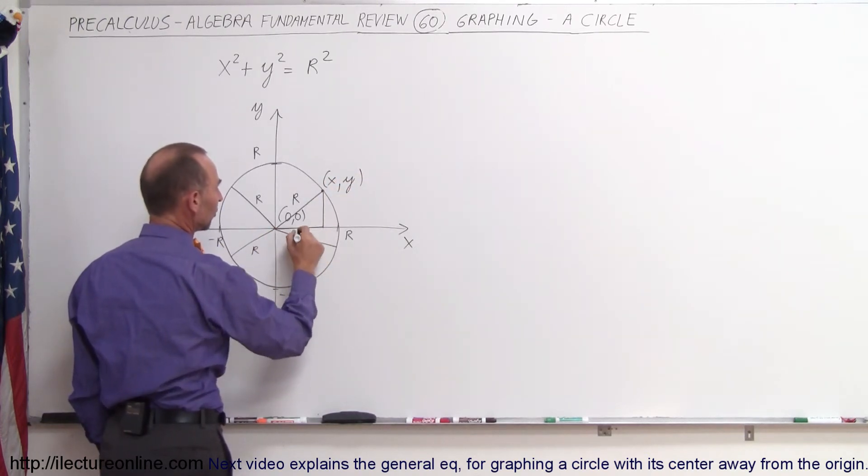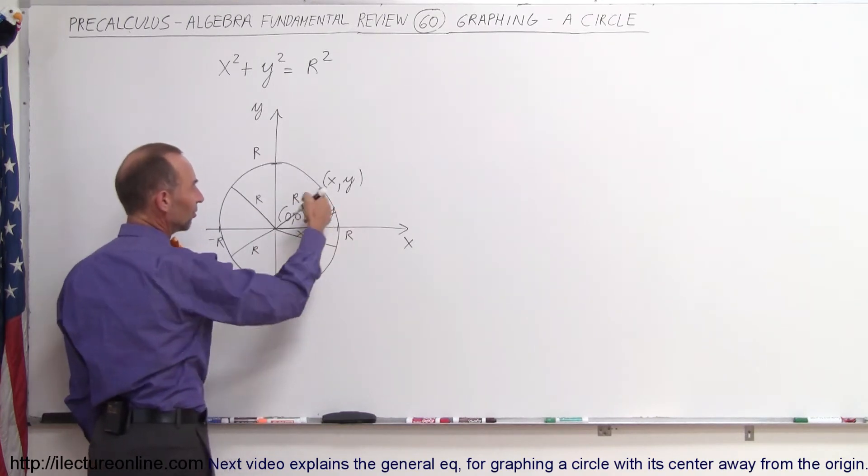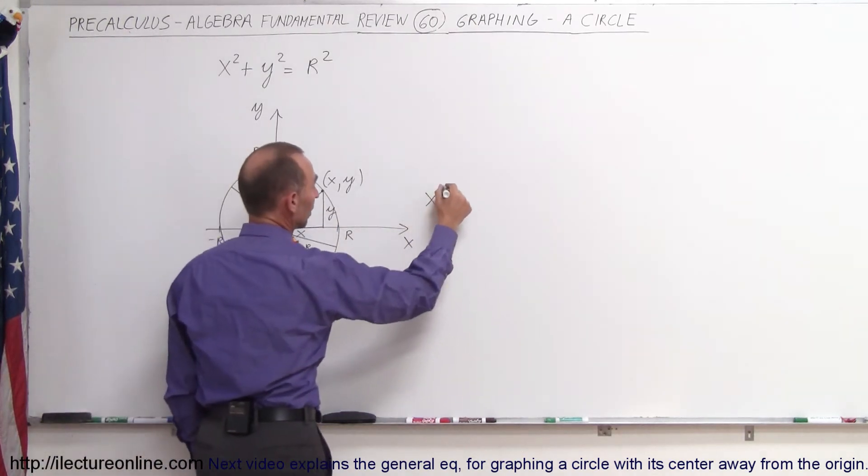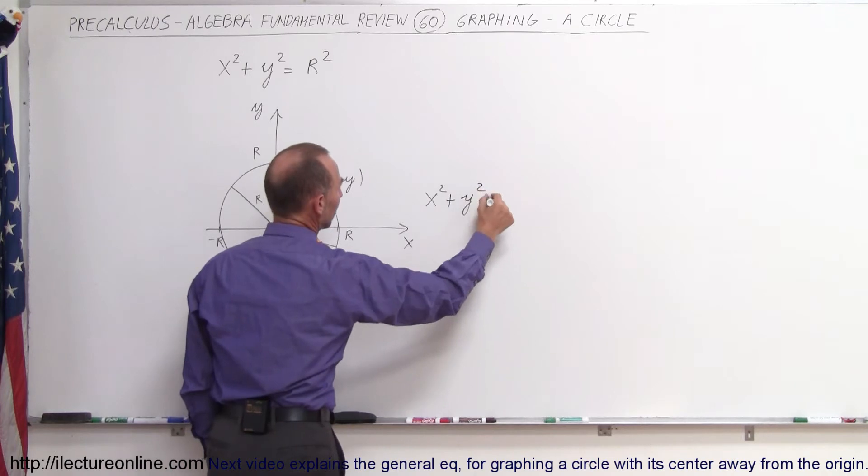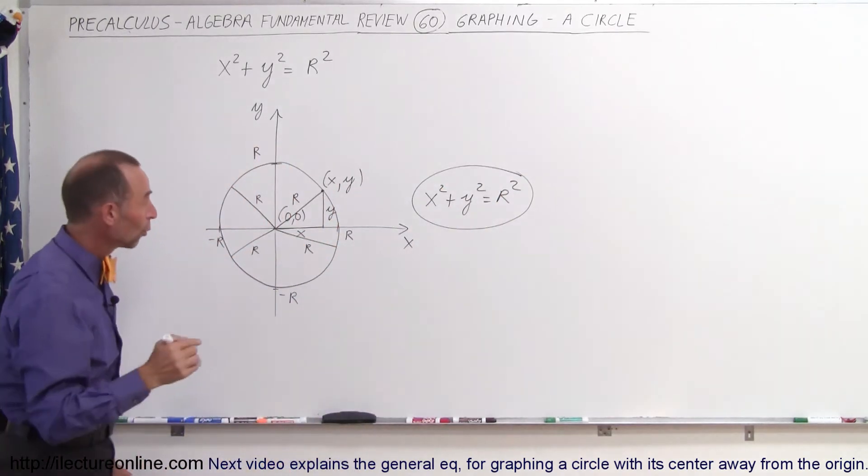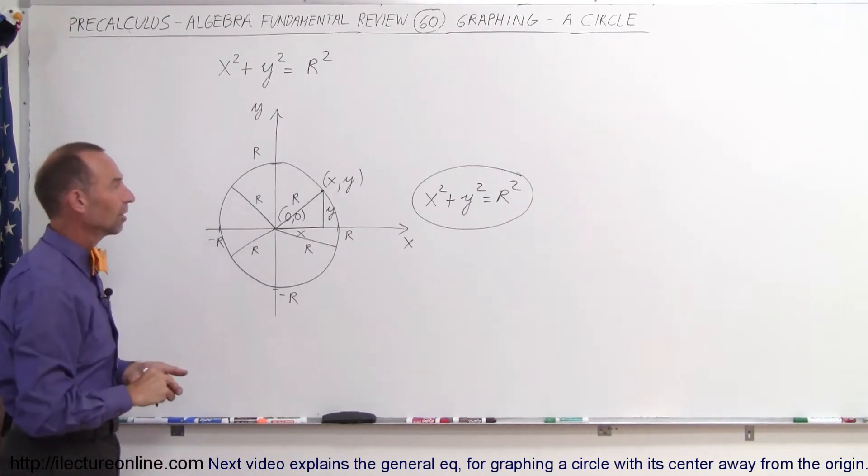so the distance from the origin to this point is equal to x, the distance from the origin to that point is equal to y, and you can now see, since we have a triangle, we can now write that x-square plus y-square equals the hypotenuse square, which then simply becomes the equation of a circle with the center at the origin.